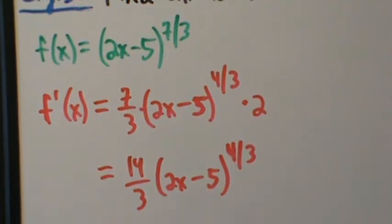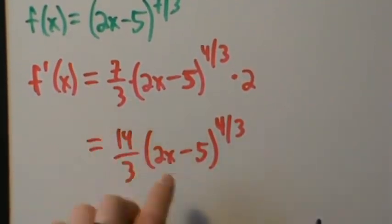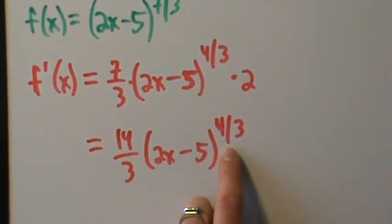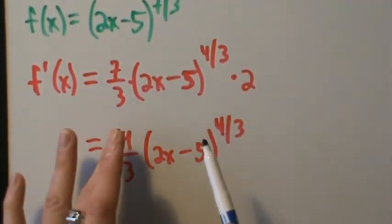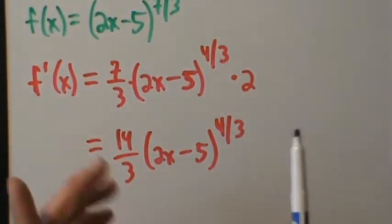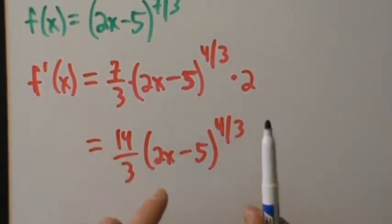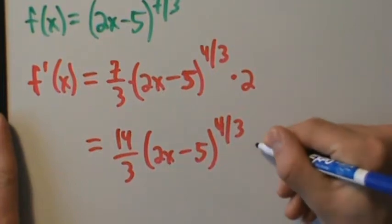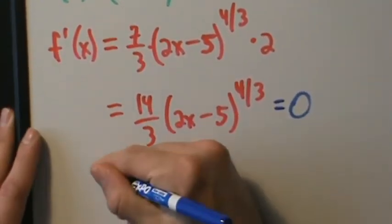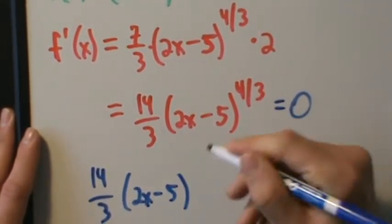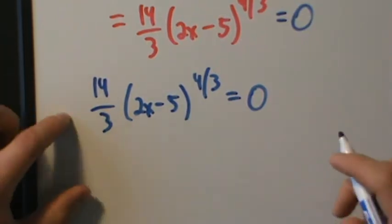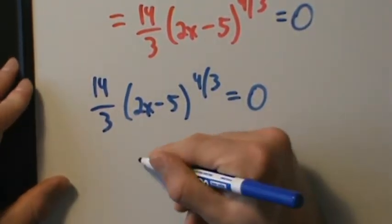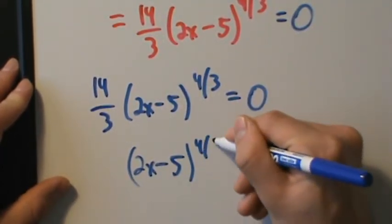Now we figure out where this derivative is zero and where it's undefined. Since 14/3 is just a constant and we're raising (2x minus 5) to the 4/3 — an odd root — there are no domain restrictions, so f'(x) is never undefined. We just need to solve 14/3 times (2x minus 5) to the 4/3 equals 0, which simplifies to (2x minus 5) to the 4/3 equals 0.